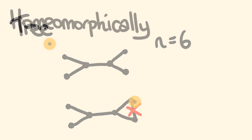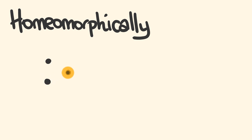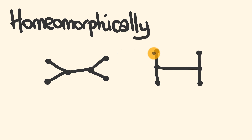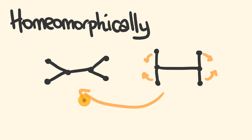The second word to look at is 'homeomorphically.' I'll show you what this means. Say we have a tree where N equals 6, and I draw another tree that looks a bit like the letter H — that's also N equals 6. These two are not unique; they are actually the same. If you move the dots and sticks around, you'd end up with the same drawing. So we're looking for unique drawings — you can't draw two trees and call them different if they have the same connectivity structure.